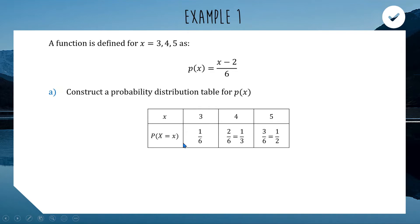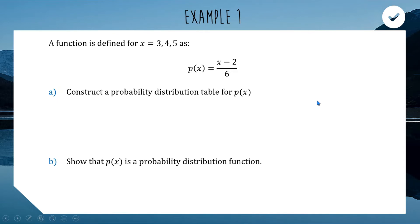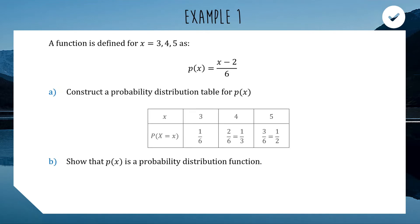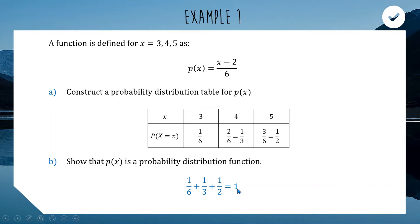For part b, we need to show this is a probability distribution function. We have three distinct outcomes, so they are mutually exclusive. We also check that the probabilities sum to one: 1/6 plus 1/3 plus 1/2 equals one. Both criteria are met, so P(x) is indeed a probability distribution function.